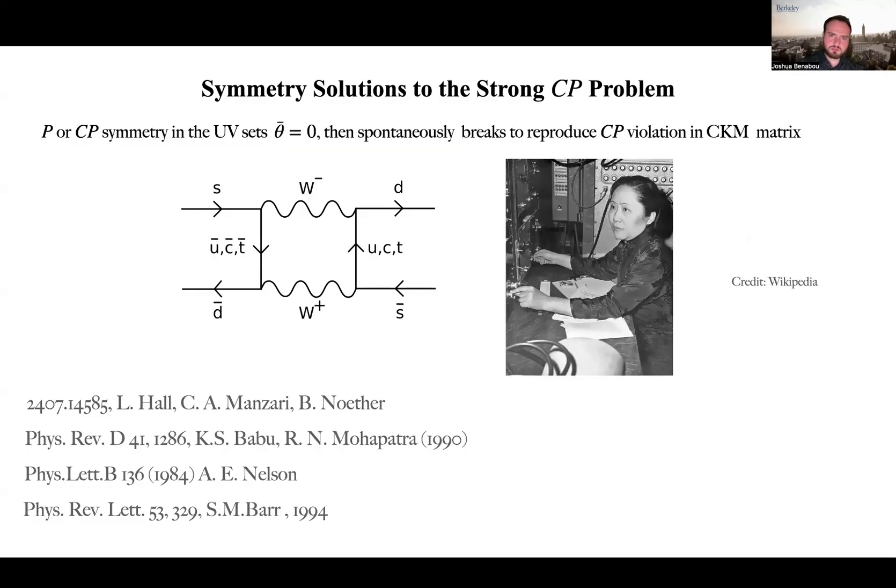Let us recall the meaning of these discrete symmetry solutions. In these solutions, we impose, for example, P or CP symmetry in the UV, and that would set theta bar equal to zero.